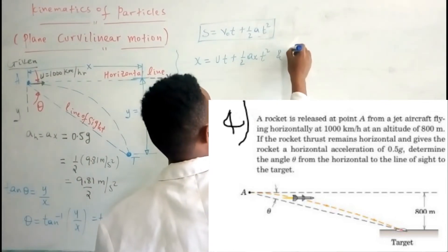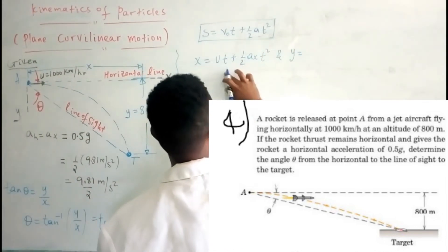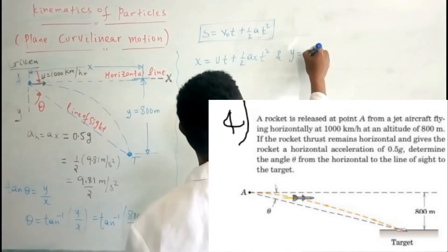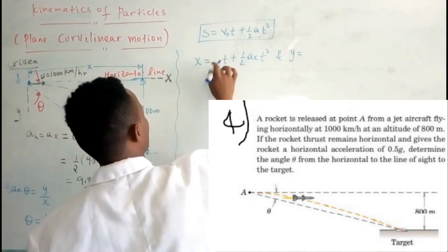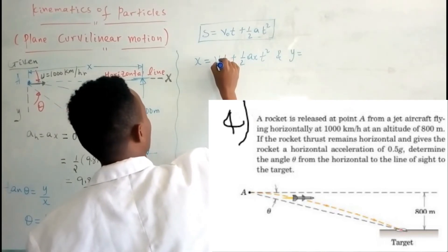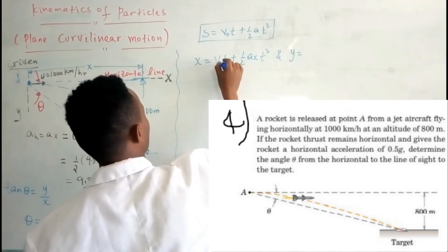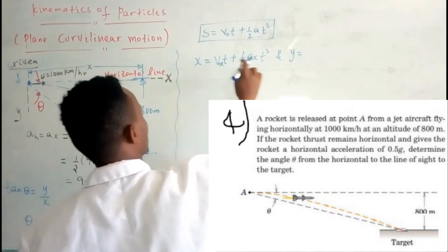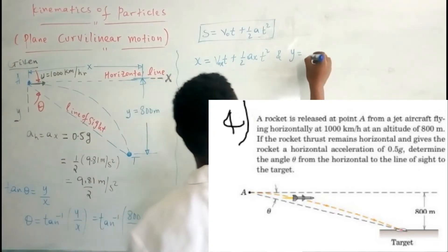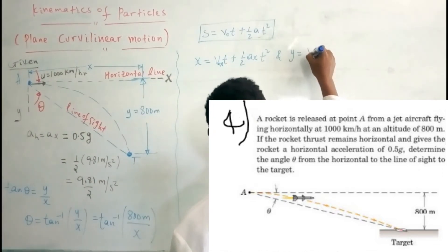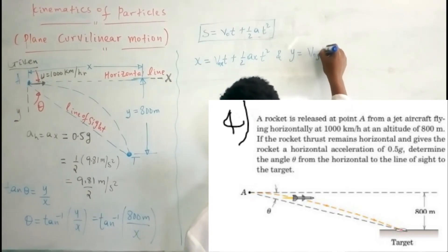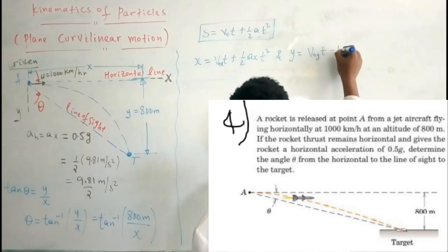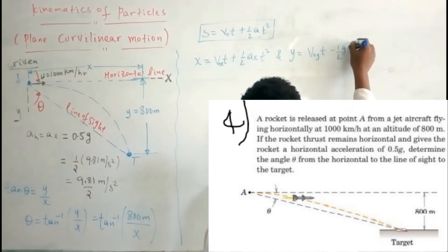Why is it called curvilinear motion? Now, u — V_x-component — the initial velocity along the x-direction. And this one is the initial velocity along the y-direction times t minus 1 over 2 gravity times t squared.